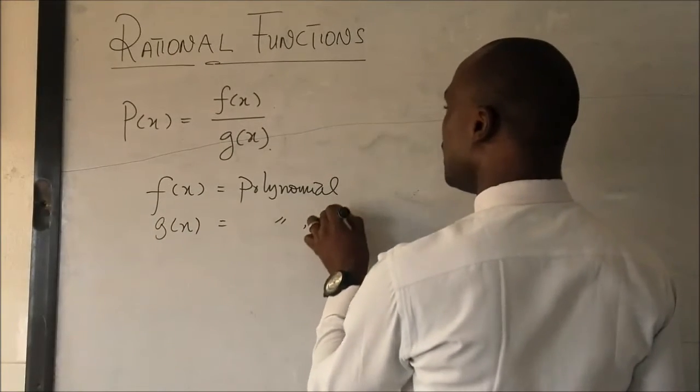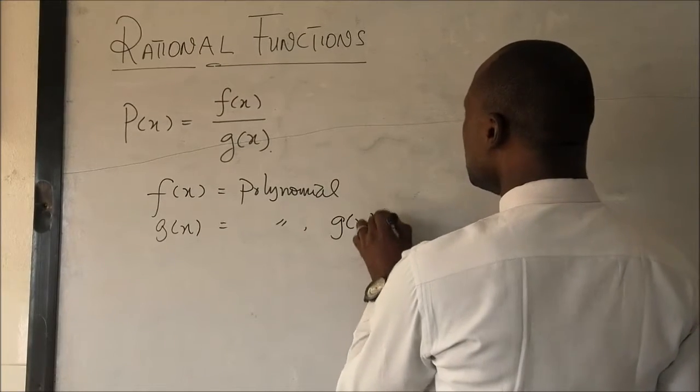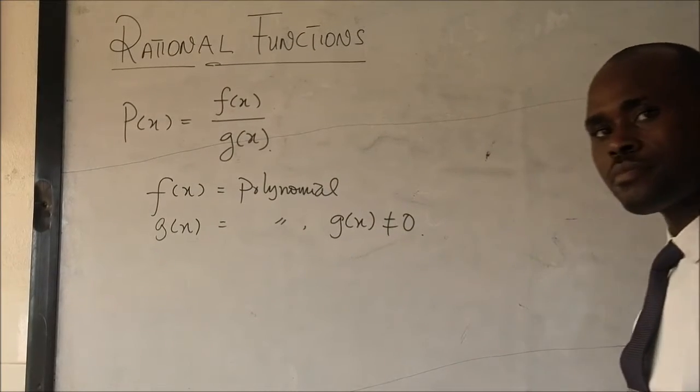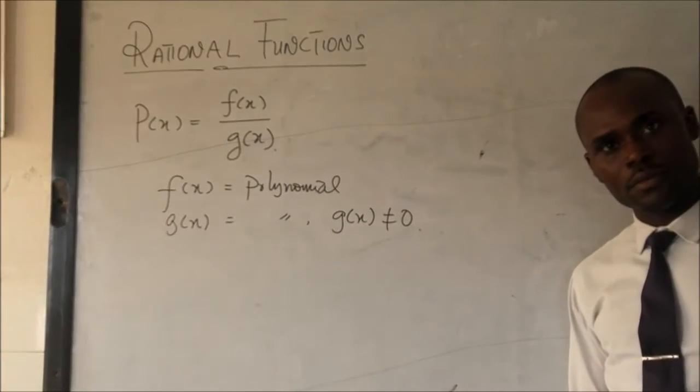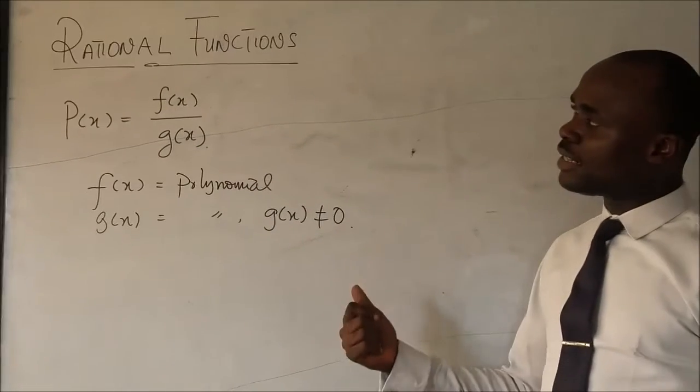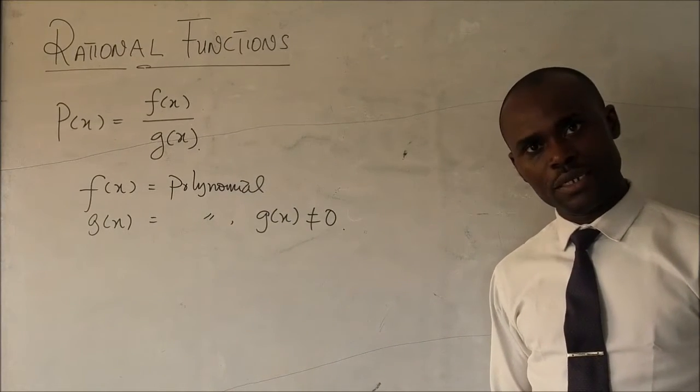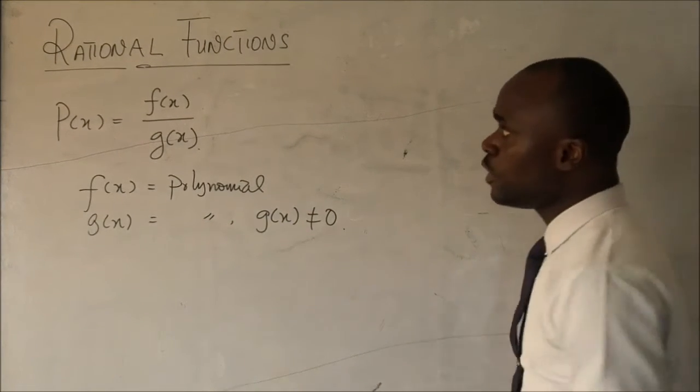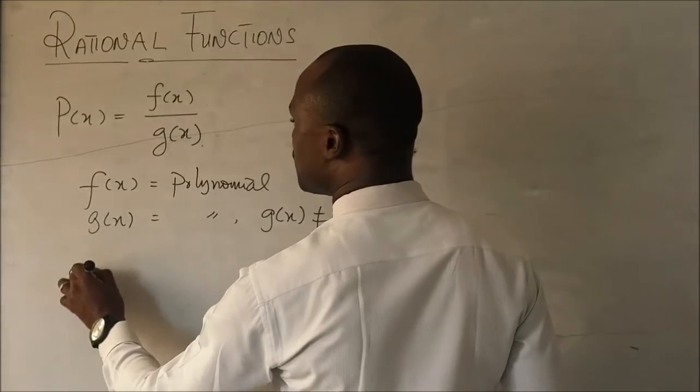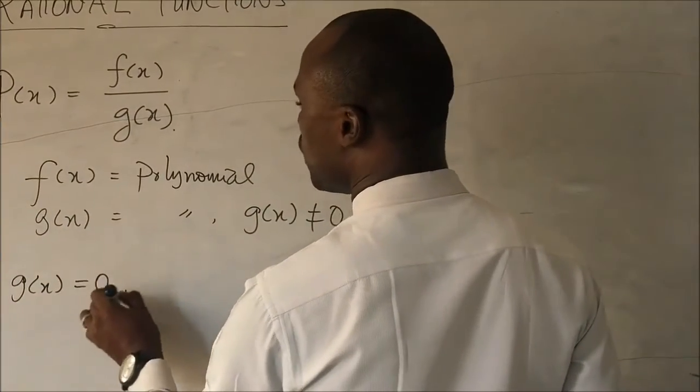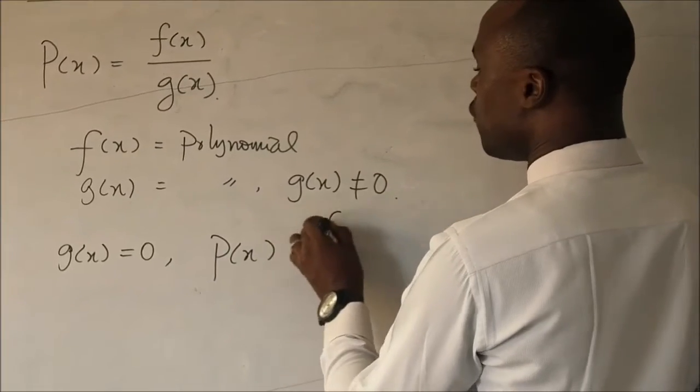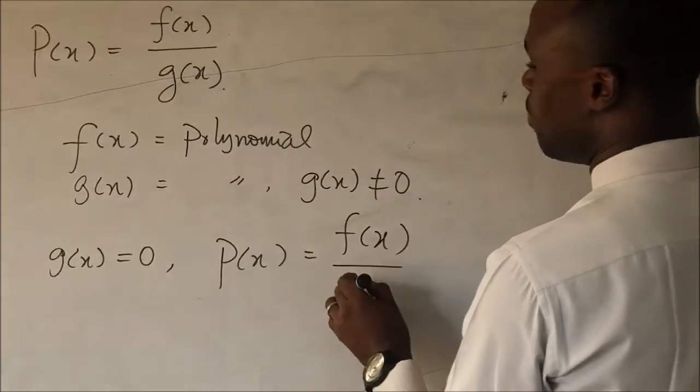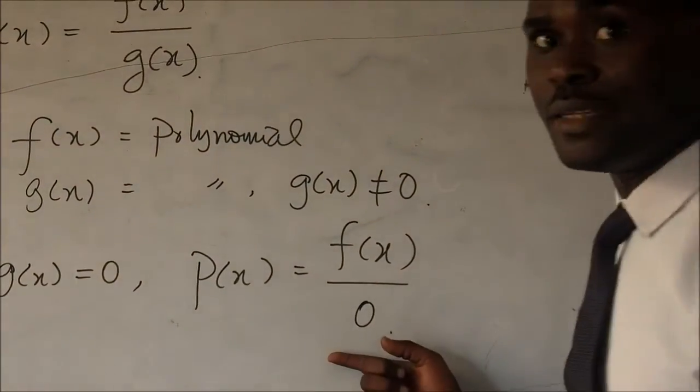But interestingly, g of x should not be zero because division by zero is not permitted in mathematics. If we divide anything by zero in mathematics, we say it's undefined. So if g of x is actually equals to zero, then we have p of x to be equals to f of x divided by zero.